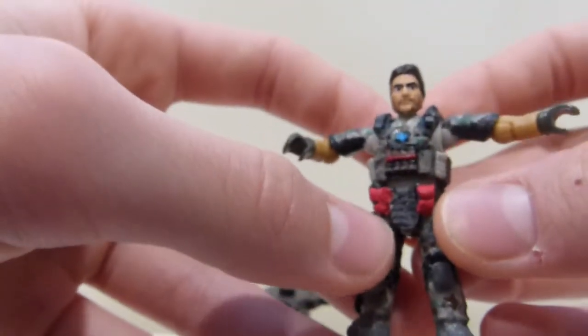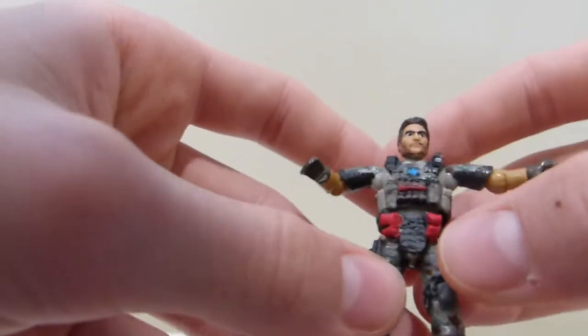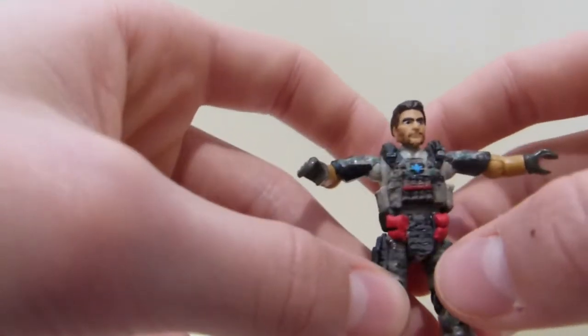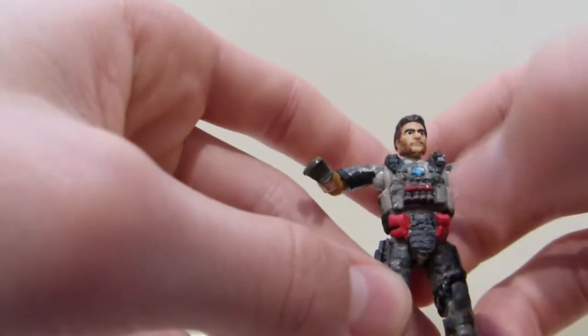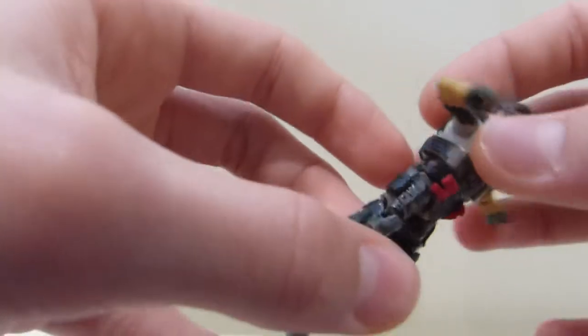Then, around his midsection, he has two shotgun shells on each side. Then, he also has this kind of groin protection piece, which I made out of clay. And then, I did some black detailing over the grey bits.